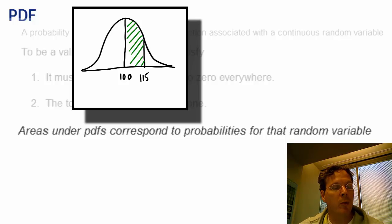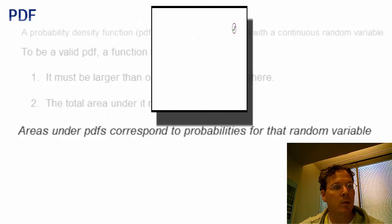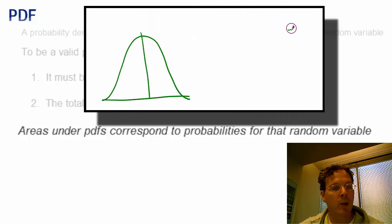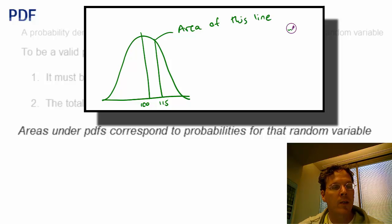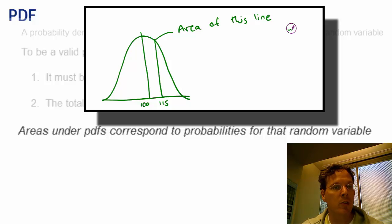Interestingly, when we model continuous probabilities for continuous random variables like this, the probability that it takes any specific value is in fact zero, because the area of a line is zero. This isn't a problem — it is just a quirk from modeling random variables as if they have infinite precision, and it doesn't cause any issues.